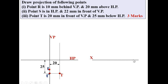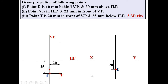Now draw point T with instruments. Draw the horizontal XY line and the vertical line, since T and T' lie on the same vertical line. Point t is 20 mm below the XY line - mark that with the scale. T' is 25 mm below the XY line - mark that as well, 25 mm. This is the projection of point T: T and T'. That is the portion you have to draw in the examination. It is very simple to draw the projection of a point.